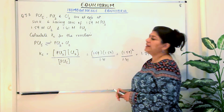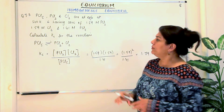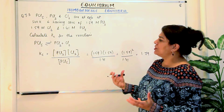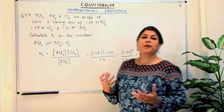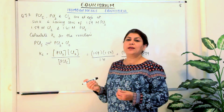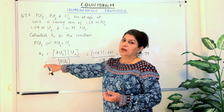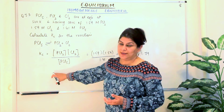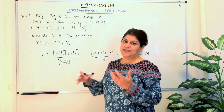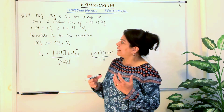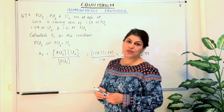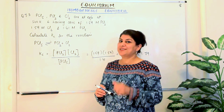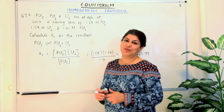So this is a very simple problem. You were given the concentrations and you are only expected to plug in the values in the equation for calculation of the equilibrium constant. So let us now move on to the next problem, that is question 7.4.